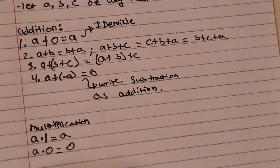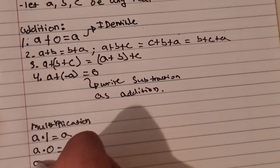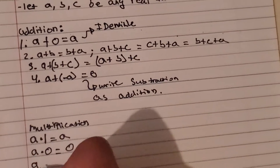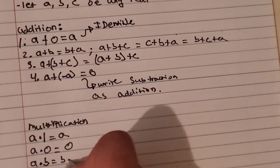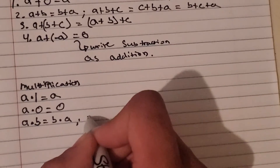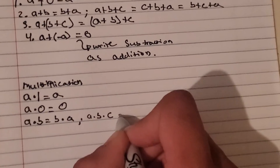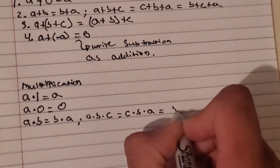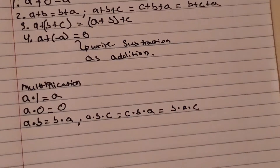And just like addition, we can multiply things in any order. Multiplication, like addition, is commutative. So if we have A times B, it'd be the same as B times A. Similarly, if we had A times B times C, it'd be the same as C times B times A, or B times A times C, and so on and so forth.